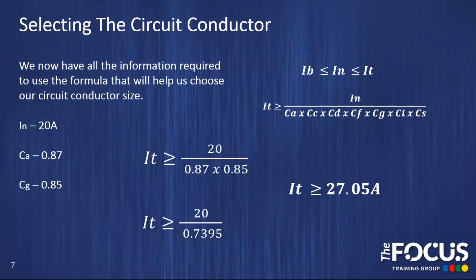Now we have all the information required, we can use the formula that will help us choose our circuit conductor size. We have our protective device rating IN of 20, our CA rating factor of 0.87 and our CG grouping factor of 0.85. Remembering our two formulas: IB is less than or equal to IN, which is less than or equal to IT. So to choose a value for IT, it needs to be greater than or equal to IN divided by our applicable rating factors. In this scenario we only have two rating factors to apply, so we put all the figures into the formula: IT should be greater than or equal to 20 divided by 0.87 times 0.85. That gives us 20 divided by 0.7395. Therefore our IT, our tabulated current carrying capacity of our cable, needs to be greater than or equal to 27.05 amps.